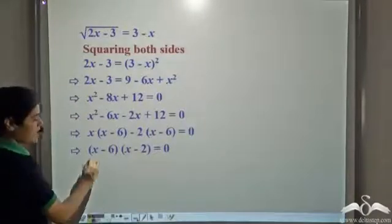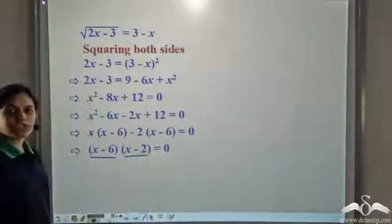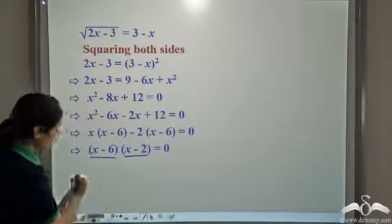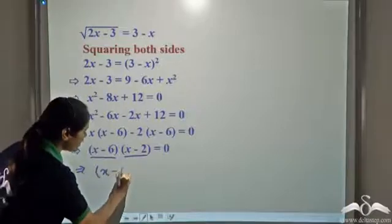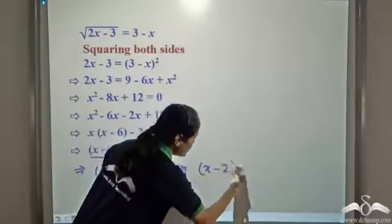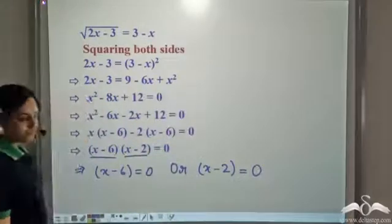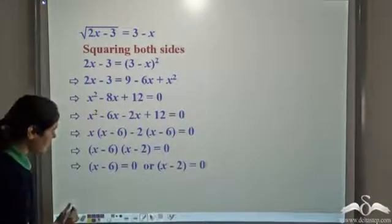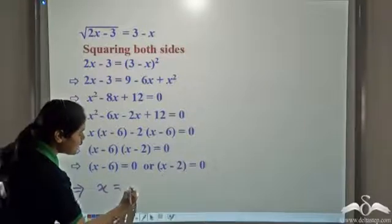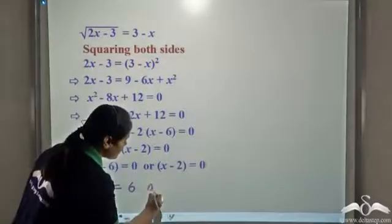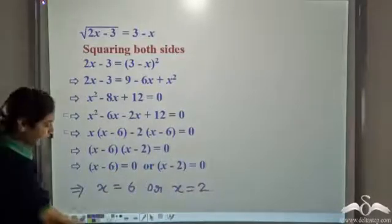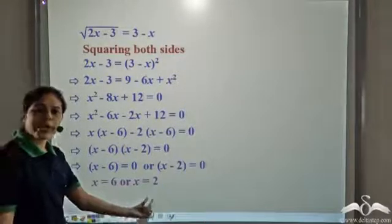Now we have x minus 6 and x minus 6 as a common factor, so we take x minus 6 into x minus 2 equals 0. The product of these two is 0, so one of them has to be 0. Either x minus 6 equals 0 or x minus 2 equals 0. Solving these gives x equals 6 or x equals 2.